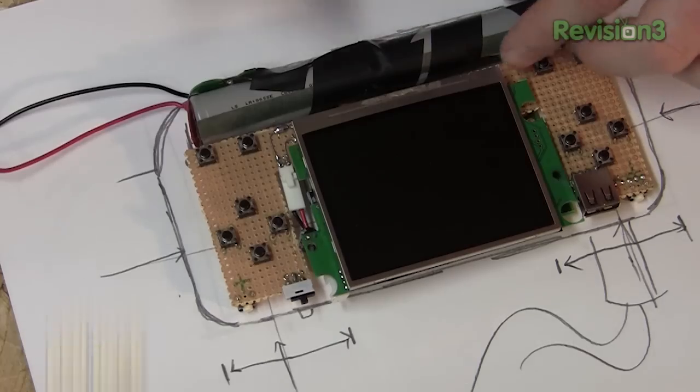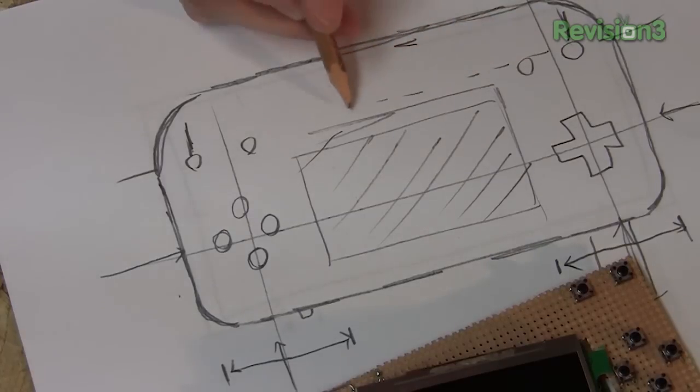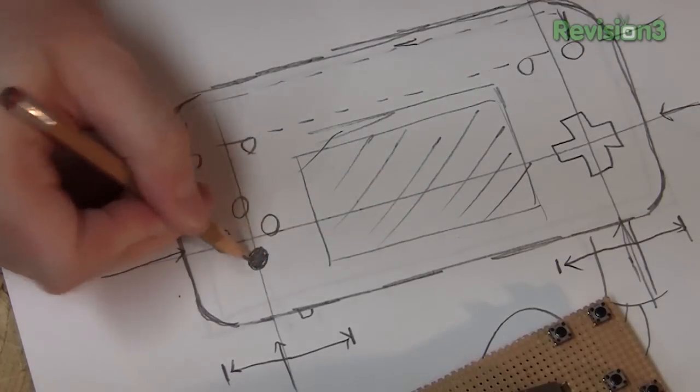Once we mock up the position of the battery pack, we can safely estimate and draw what our case will actually look like. Again, it's important to leave yourself extra space inside for mods, wires, and other issues that might crop up.